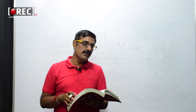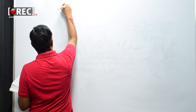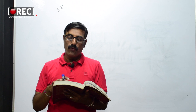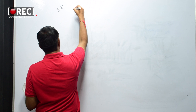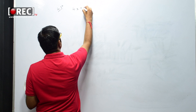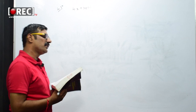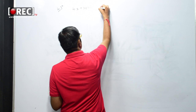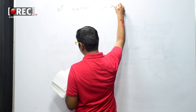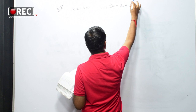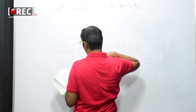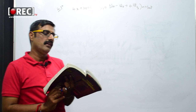One more problem on page 167, exercise problem 4.37 in Matthew Sadiku. A dielectric interface is defined by 4x + 3y = 10 meters. The region including the origin is free space, region 1, where D1 is given as 2âx - 4ây + 6.5âz nanoCoulombs per meter squared.